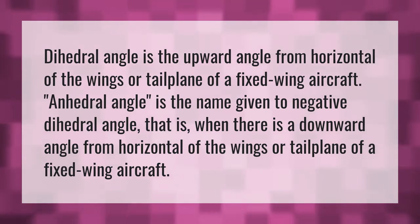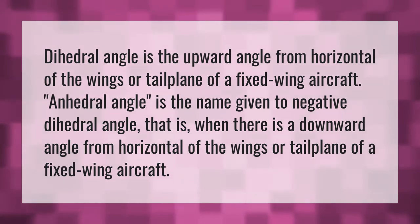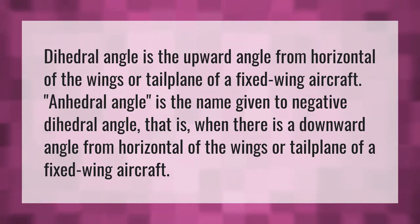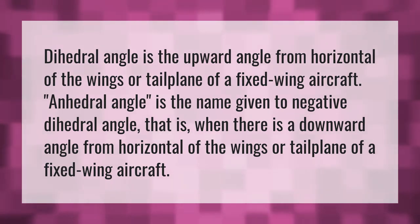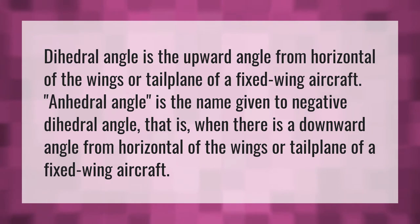Dihedral angle is the upward angle from horizontal of the wings or tailplane of a fixed-wing aircraft. Anhedral angle is the name given to negative dihedral angle, that is, when there is a downward angle from horizontal of the wings or tailplane of a fixed-wing aircraft.